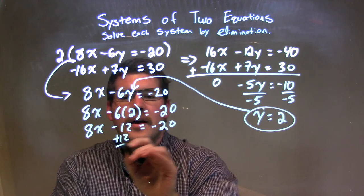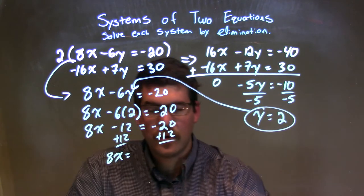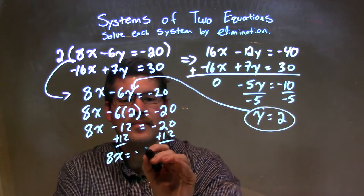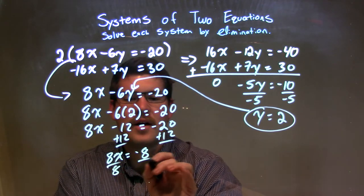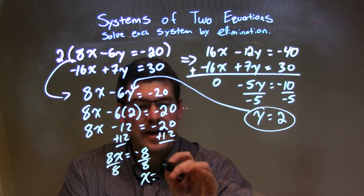Add a 12 to both sides. We have 8x equals negative 20 plus 12, which is a negative 8. Divide by 8 to both sides. And x equals negative 8 divided by 8 is a negative 1.